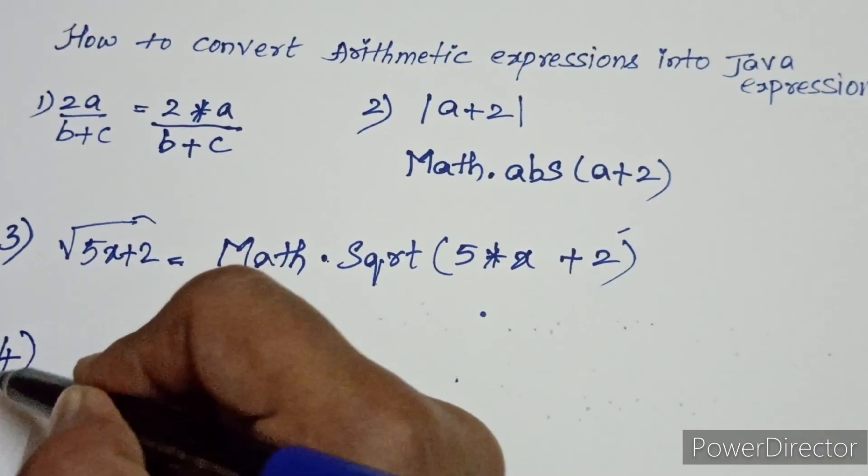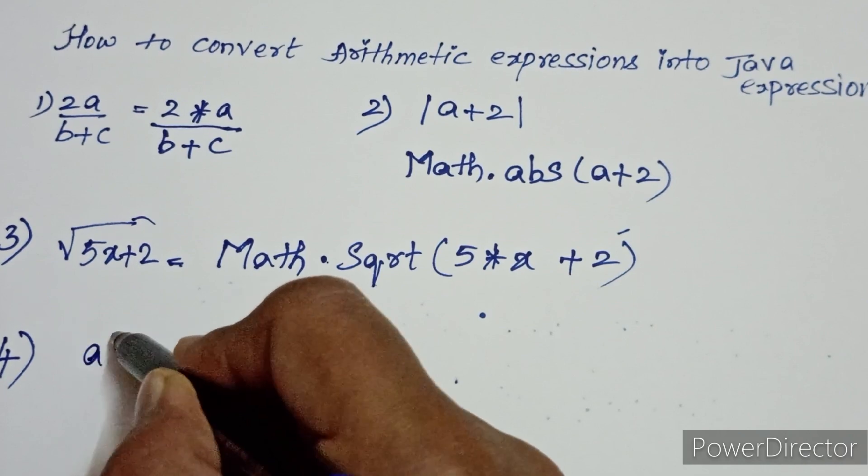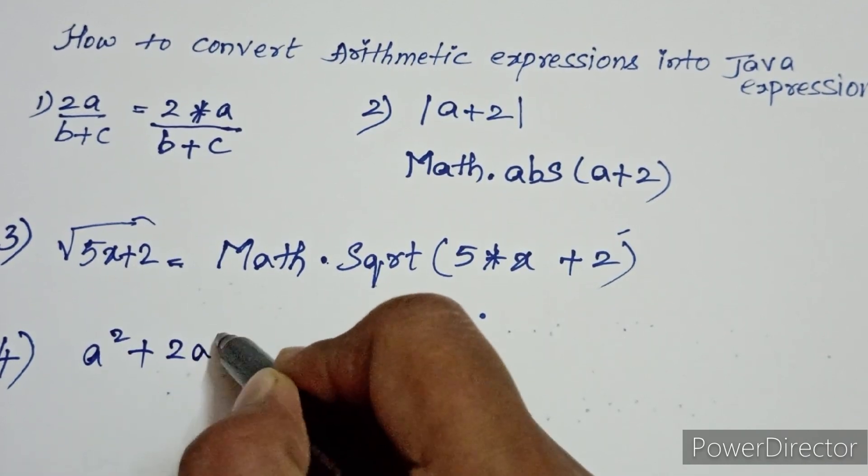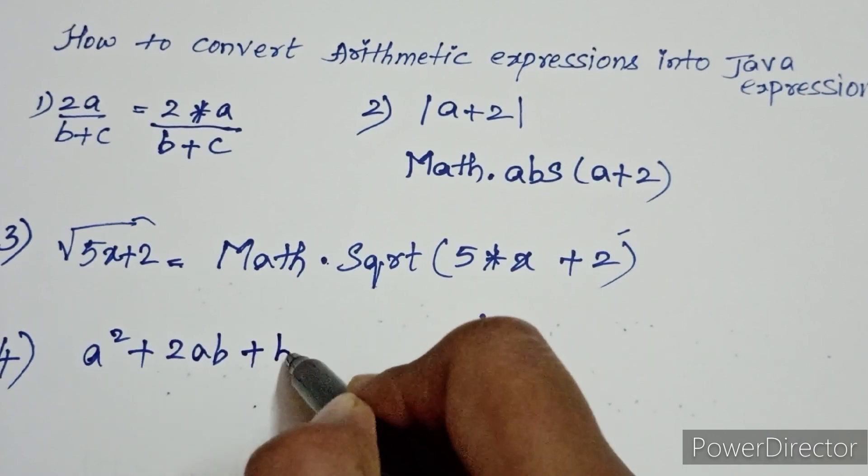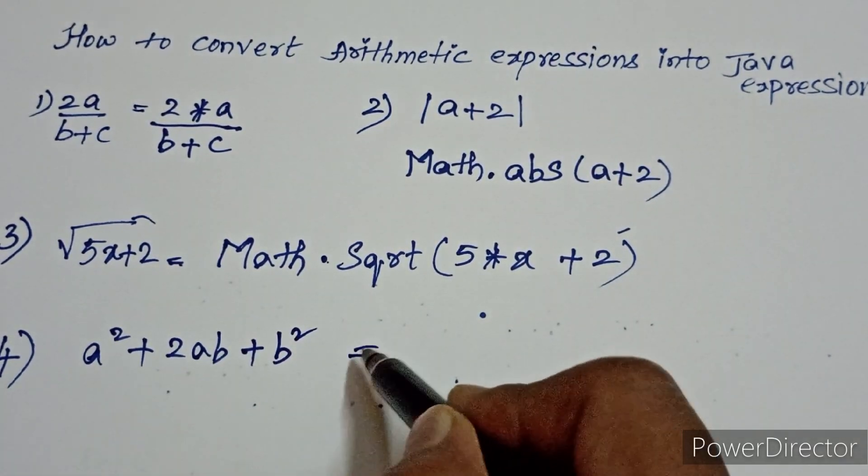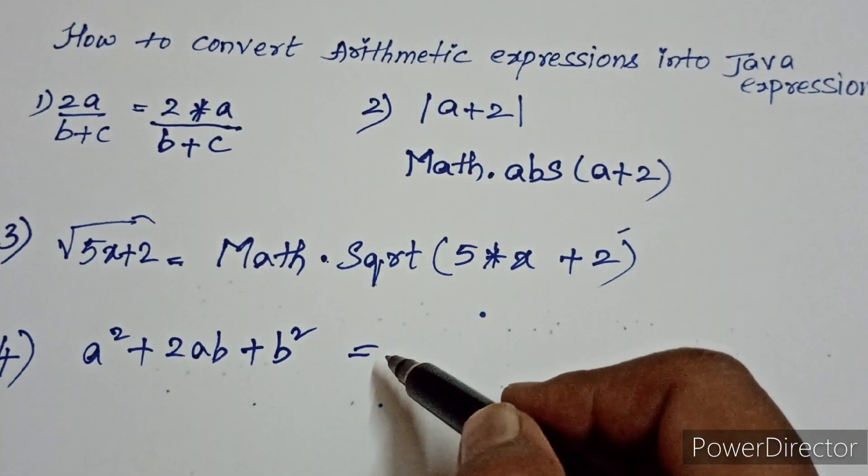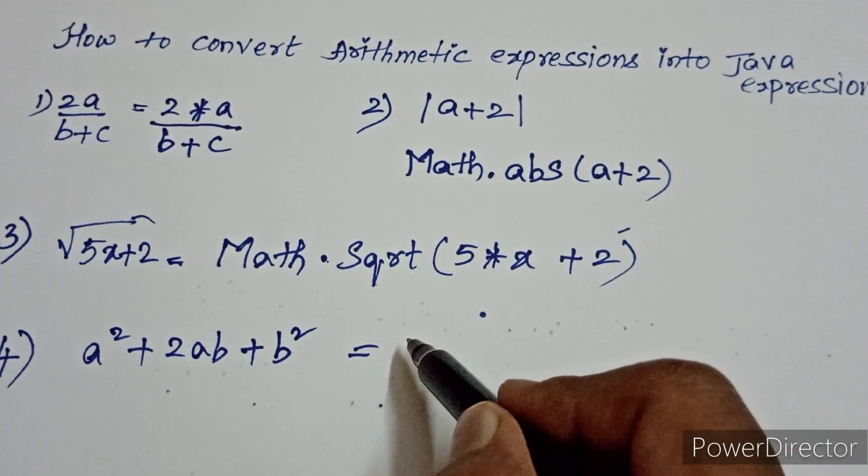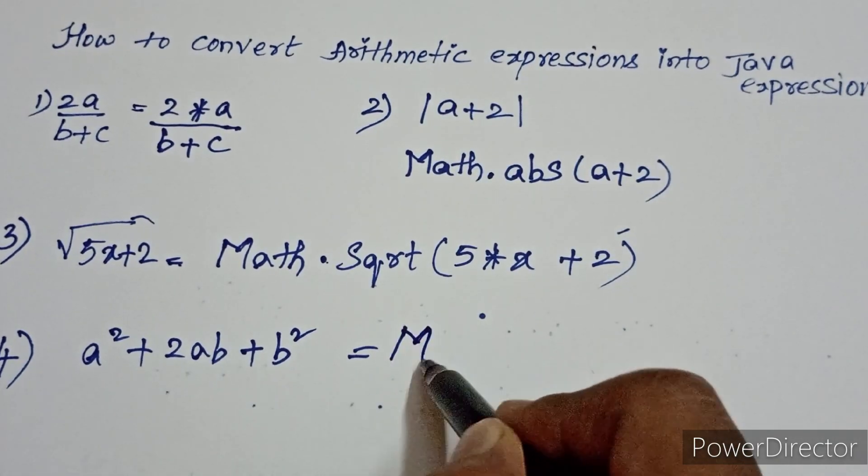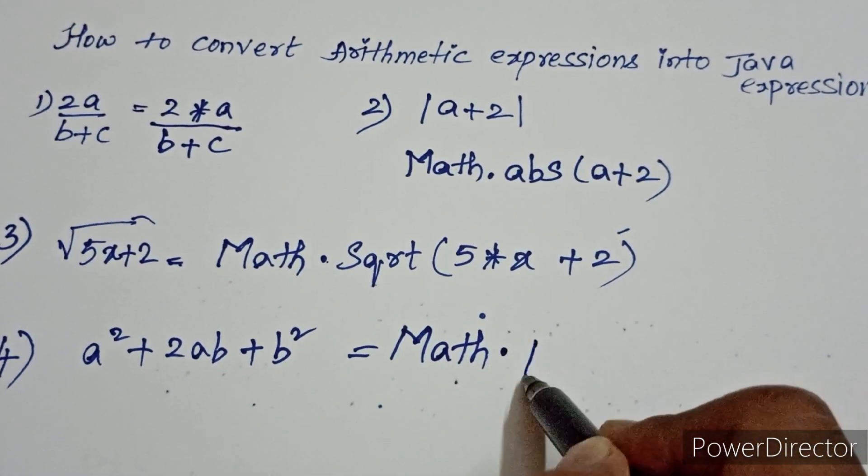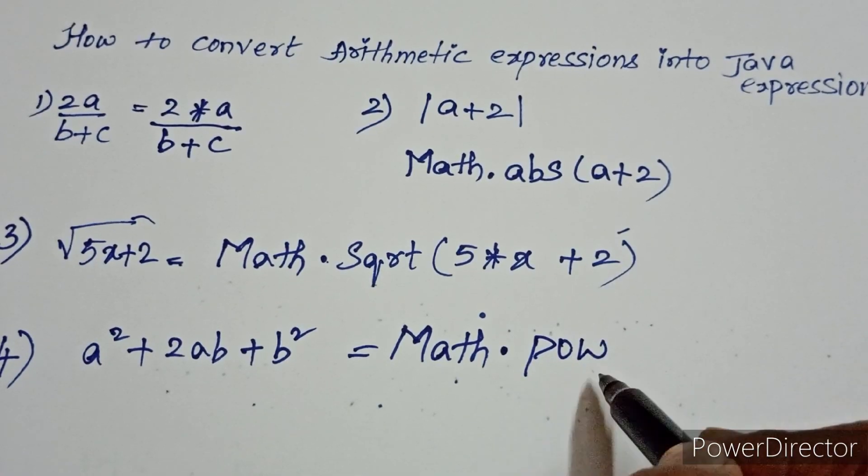Let's do one more example: a square plus 2ab plus b square. How will you write square? For square, one more predefined method is defined in your Math class called power. Write M in uppercase, Math dot pow. Math dot pow, pow means power.